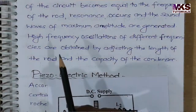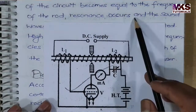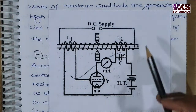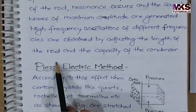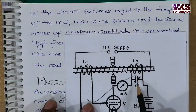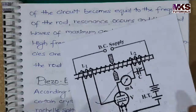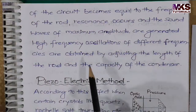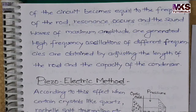When the frequency of the circuit becomes equal to the natural frequency of the rod, resonance occurs, and sound waves of maximum amplitude are generated. High frequency oscillations of different frequencies can be obtained by adjusting the length of the rod or the value of the variable condenser. This is how ultrasonic waves, in the frequency range above 20 kHz, are produced using the magnetostriction method.